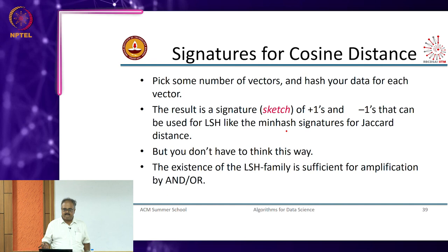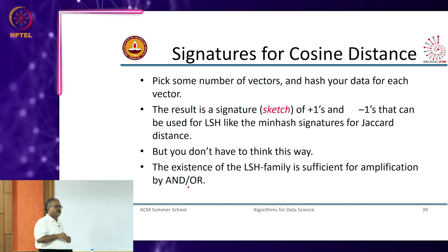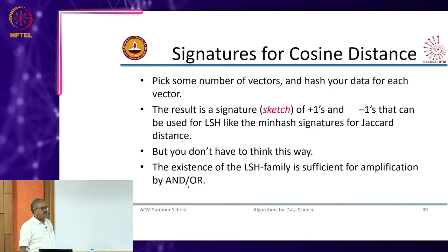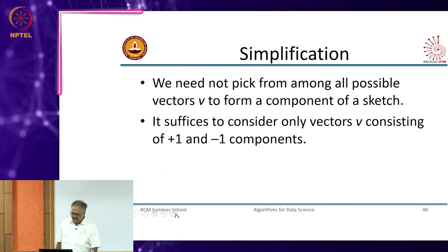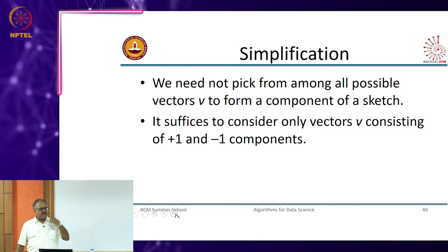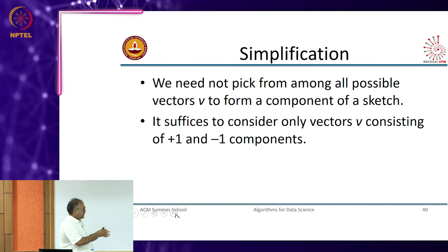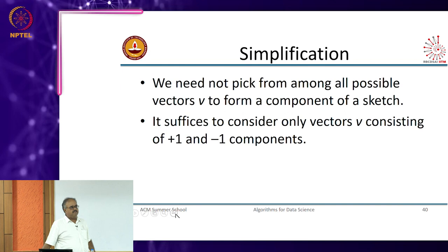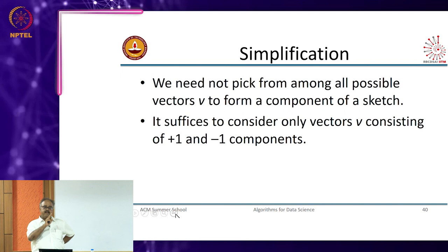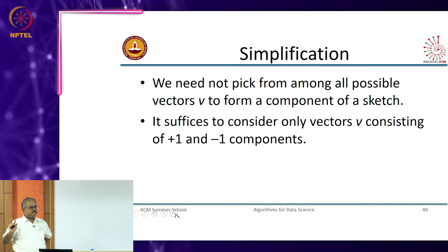You can do AND, OR or AND constructions here as well — break it into 5 bands of 10 hyperplanes each and do an OR-AND construction. In fact, you can do something even more clever. Since I am only interested in the sign, I can take vectors of the same size as the space I am embedded in — suppose I have a p-dimensional vector space, I can take a p-dimensional vector where I randomly select each component to be plus 1 or minus 1.